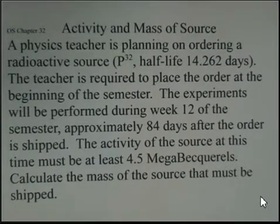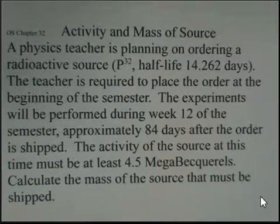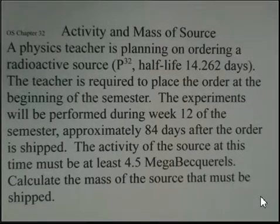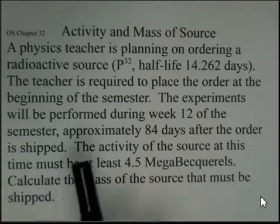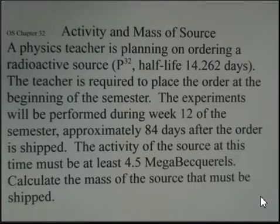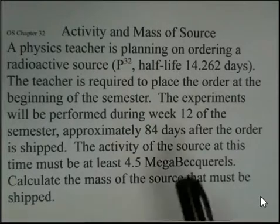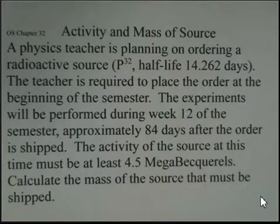This video deals with the activity of a sample and the mass of the source in order to produce a certain activity at a later time. We're going to deal with phosphorus-32, that isotope, which has a half-life of 14.262 days.